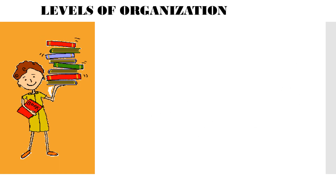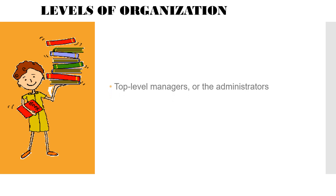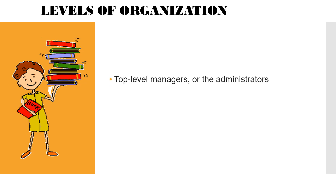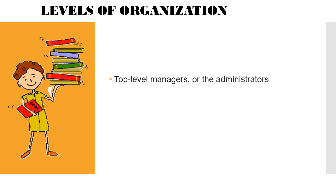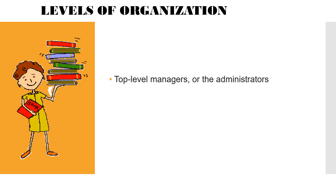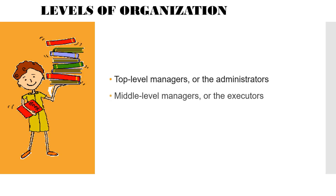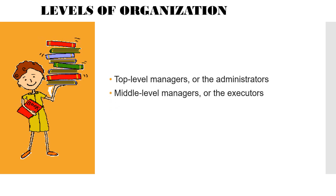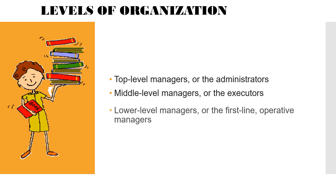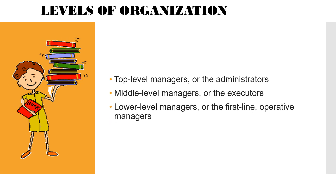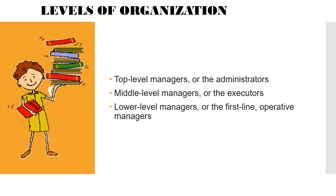Levels of organization. There are three levels of organization: top level managers or the administrators, middle level managers or the executors, and lower level managers or the first line operative managers.